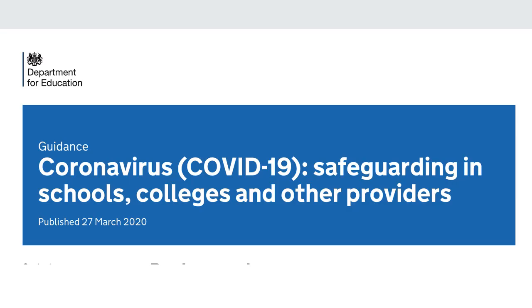At the end of March, the DfE put out some interim guidance to support schools in keeping children safe online during the coronavirus pandemic, acknowledging that schools are now using online methods to connect with children and families at home. It looks at things like streaming and all sorts of other areas, and I strongly advise you to have a look at that document, particularly the online safety section within it.